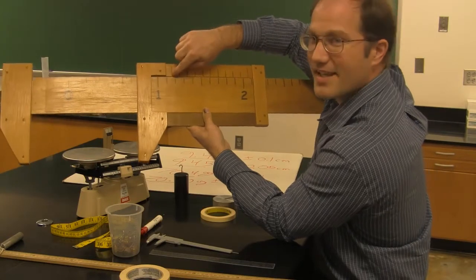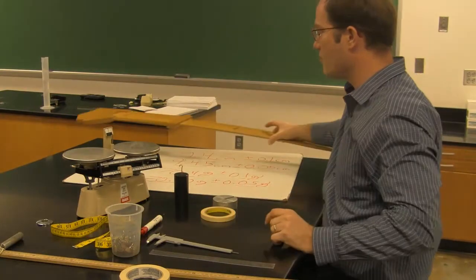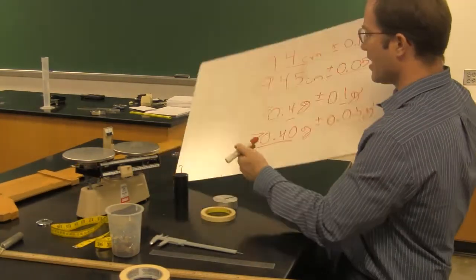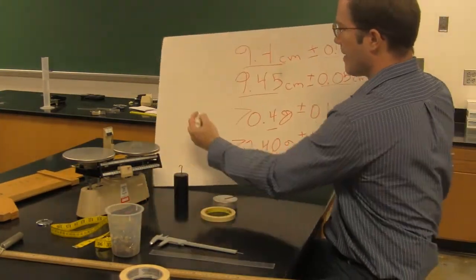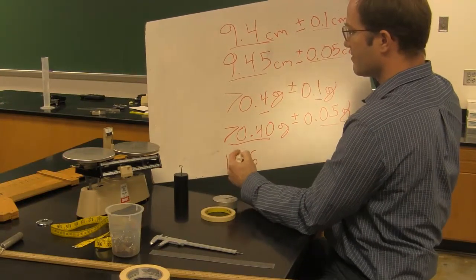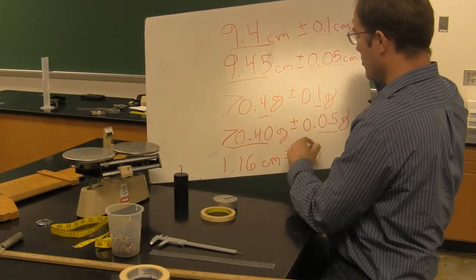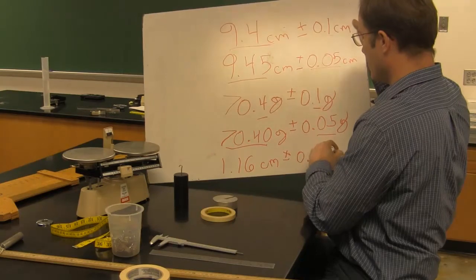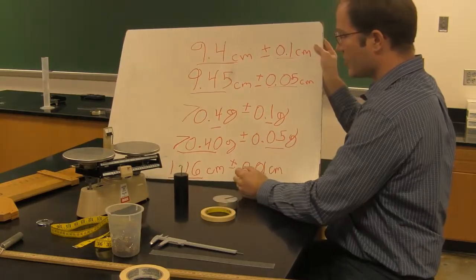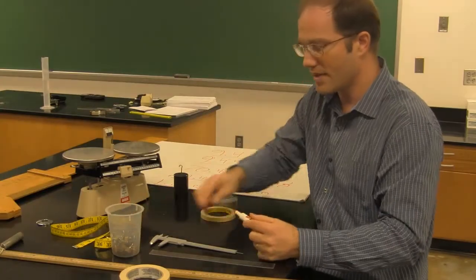1.16 centimeters, and this is plus or minus .01 centimeter using the huge vernier caliper. I can get pretty good precision using vernier calipers. It's usually much better than just using a meter stick or a plastic ruler.